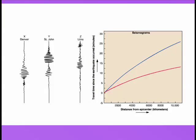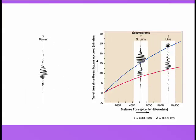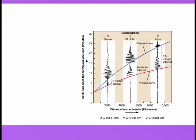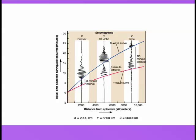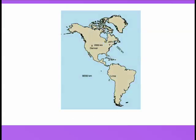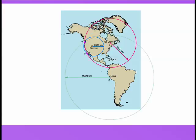We take these three seismograms and we fit them to a time travel curve. Lima is 9,000 kilometers away, while Denver is only 2,000 kilometers away. We can now plot these on a map to determine where the epicenter must be. The epicenter is 2,000 miles from Denver, but that includes any place on that blue circle. With the St. John information, there are two locations that could be at both distances. However, you add the information from Lima, and there's only one place for that epicenter. This process is called triangulation.